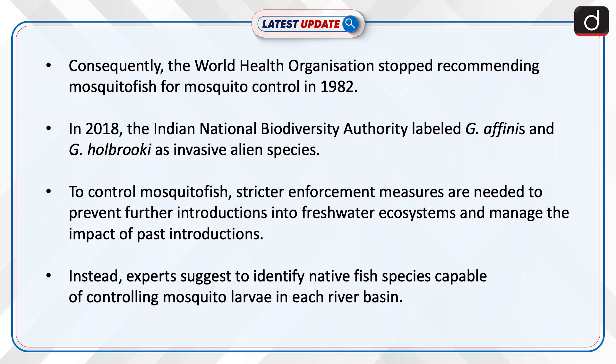To control mosquito fish, stricter enforcement measures are needed to prevent further introductions into freshwater ecosystems and manage the impact of past introductions. Instead, experts suggest identifying native fish species capable of controlling mosquito larvae in each river basin.